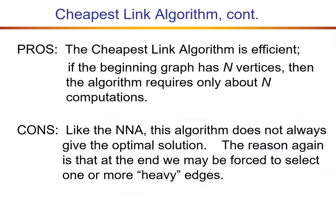Pros of the cheapest link: it's efficient — the algorithm requires only about N computations for a graph with N vertices. Cons: just like the nearest neighbor algorithm, it does not always give the optimal solution. The reason is that at the end, we may be forced to select one or more heavy edges. Brute force would take an extremely long time, even using technology.